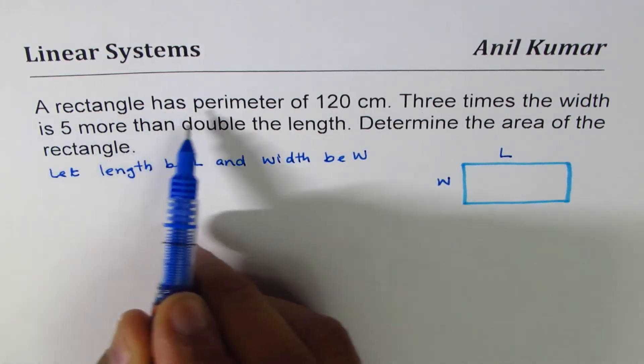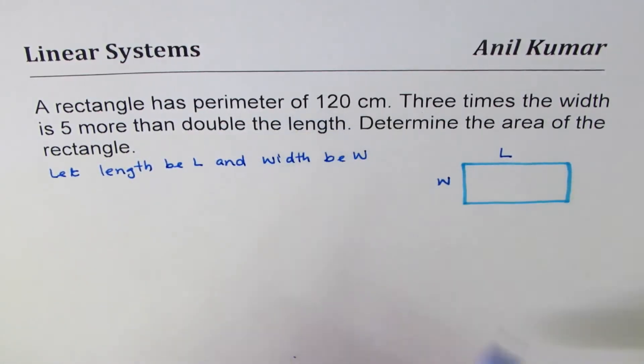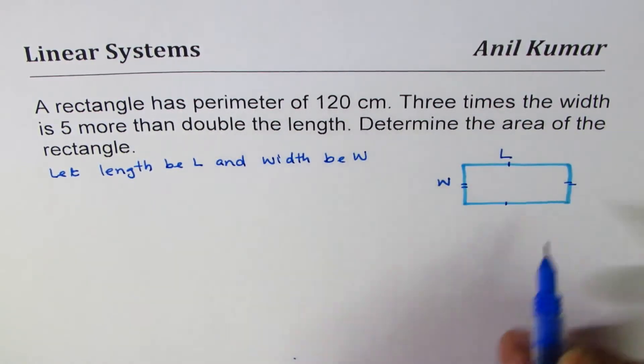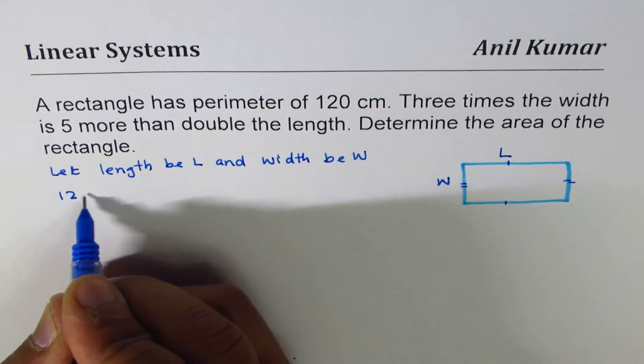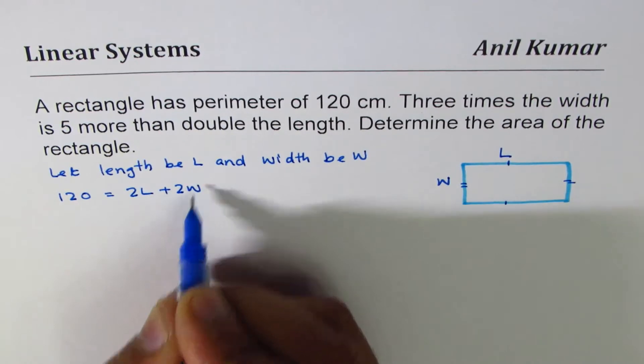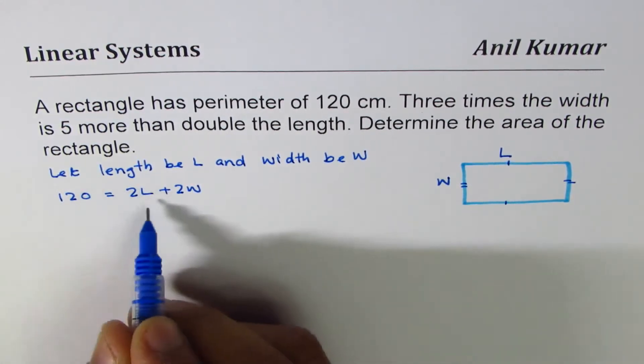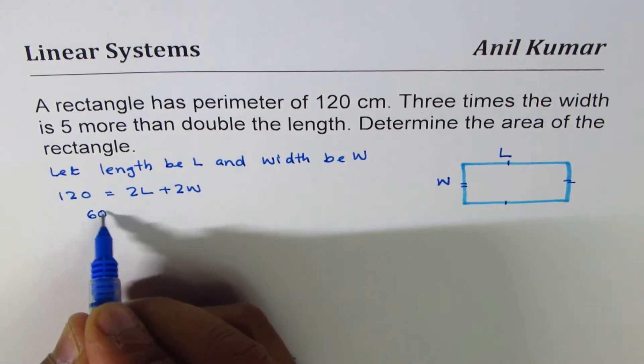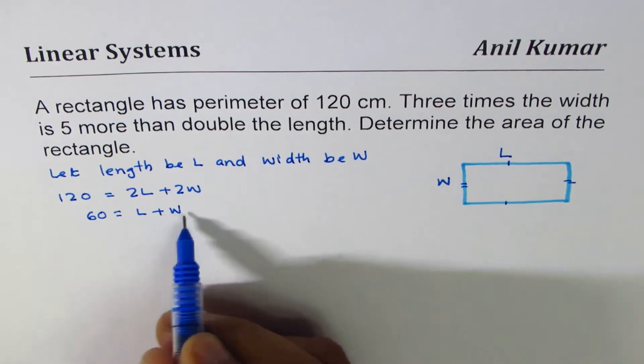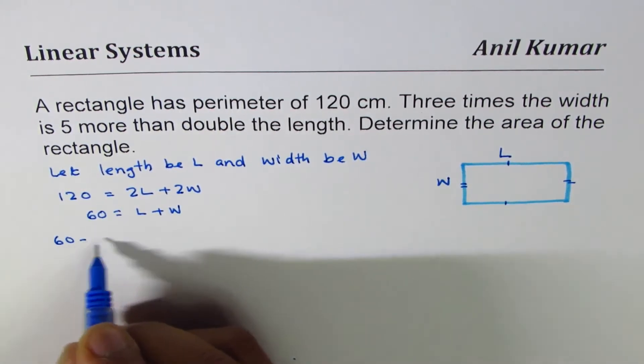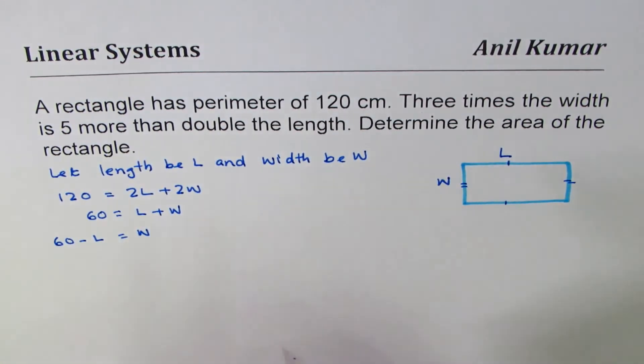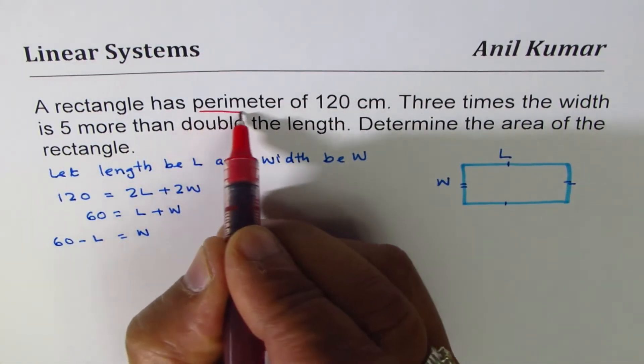Now, a rectangle has a perimeter of 120. The perimeter is 2L + 2W, so we can say 120 = 2L + 2W. If we divide by two, we get 60 = L + W. We can rearrange to say 60 - L = W. From the first statement about perimeter, we got our first equation and simplified it.